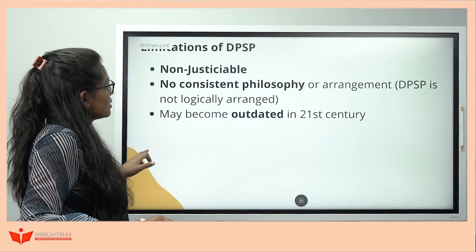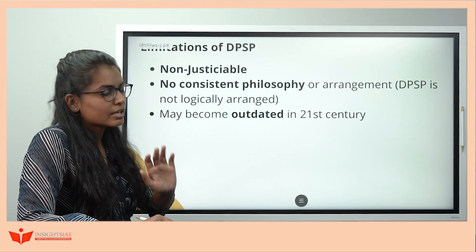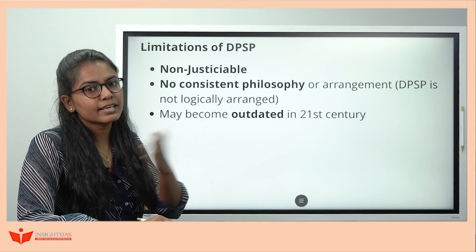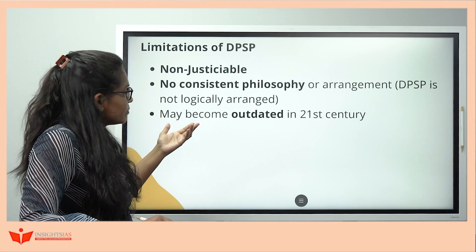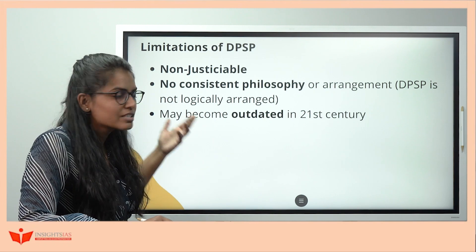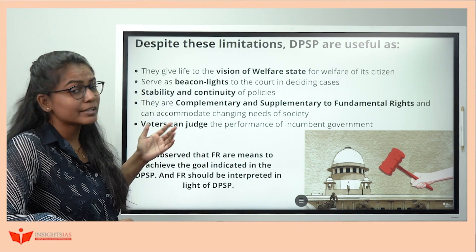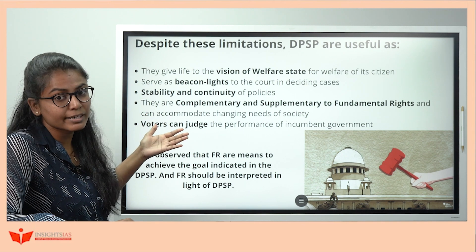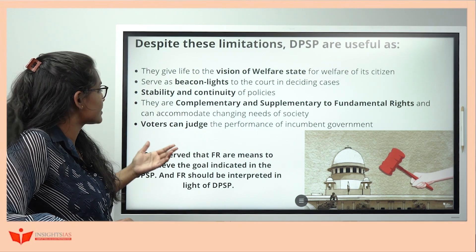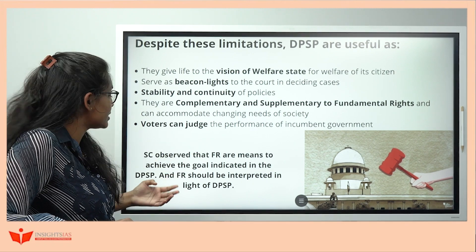Now let's see limitations of DPSP: they are non-justiciable; there is no consistent philosophy — articles from 36 to 50 are randomly arranged; they may become outdated in the 21st century as values and cultures change. However, they are very useful: they give life to the vision of a welfare state, serve as beacon lights for courts in deciding cases, provide stability and continuity of policies, are complementary and supplementary to Fundamental Rights, and help voters judge how their government is working. The Supreme Court has observed that Fundamental Rights are the means to achieve the goals set out in Directive Principles.